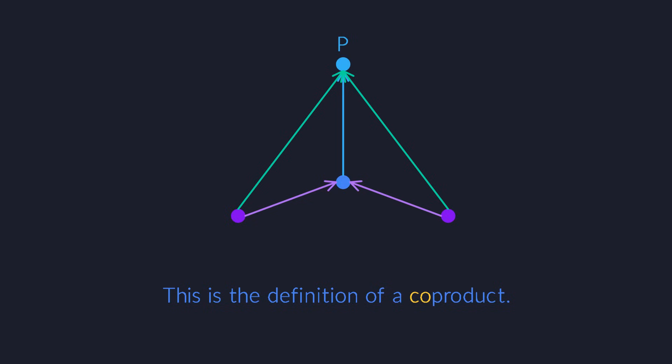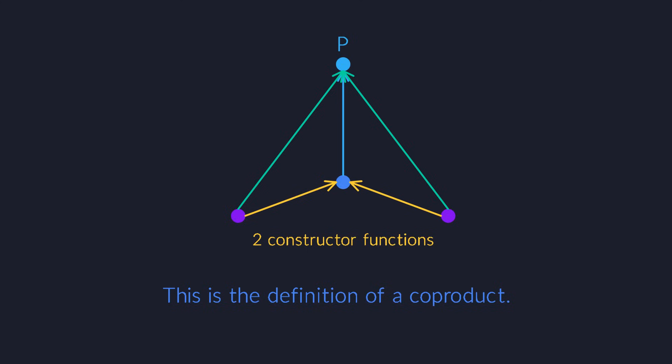The co-product is extremely useful. In fact, we have already encountered it before — it's the sum of two types. You can construct a sum value from either an integer or a name. There are two constructors. See if you can explain this diagram and convince yourself that it really is a sum type.